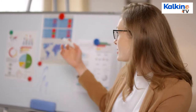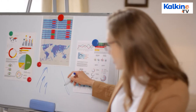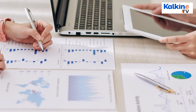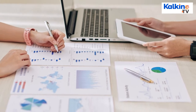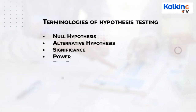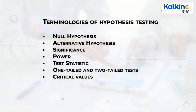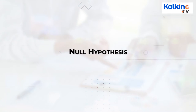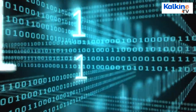The application of hypothesis testing is done in various fields and situations. However, the situation in each case differs from one another. The common thing in each case is that certain terminology is used during the process. Some of these terms include: null hypothesis, alternative hypothesis, significance, power, test statistic, one-tailed and two-tailed tests, critical values, p-values, and decision.